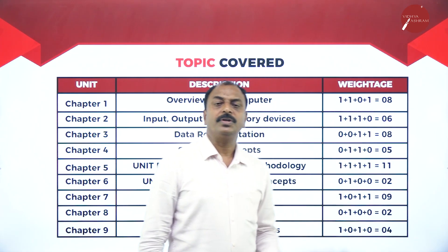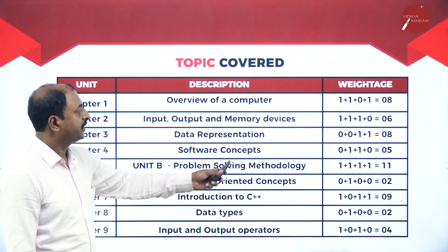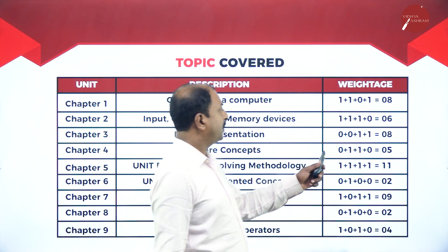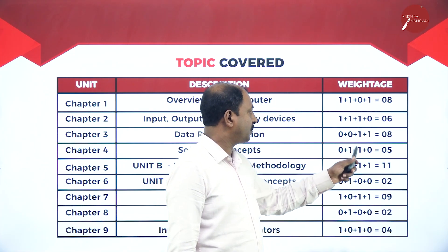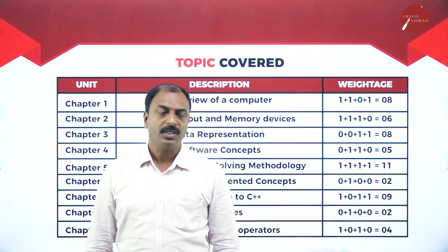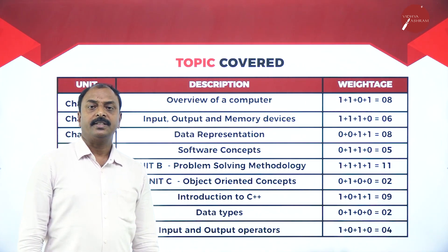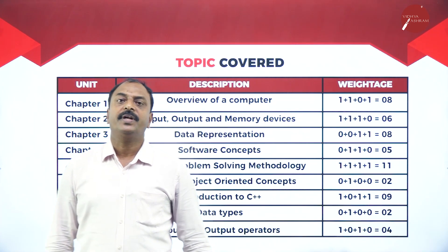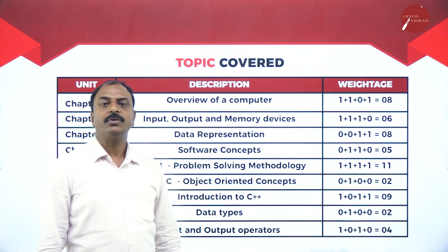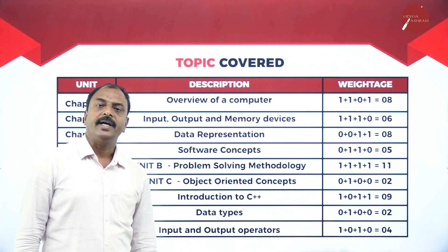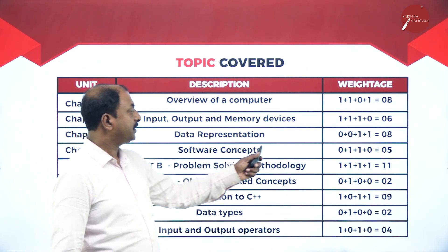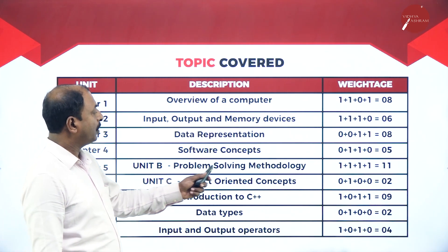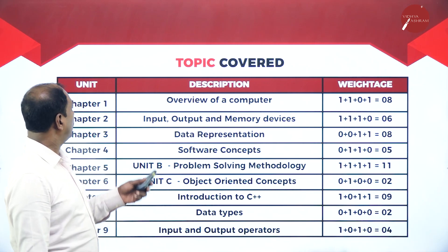Chapter three 'Data Representation' has a weightage of eight marks — one three-marks question and one five-marks question. Chapter four is 'Software Concepts,' with a weightage of five marks — one two-marks question and one three-marks question. Here we are going to learn the definition of software, what are programs, different types of software, different types of operating systems, and related definitions.